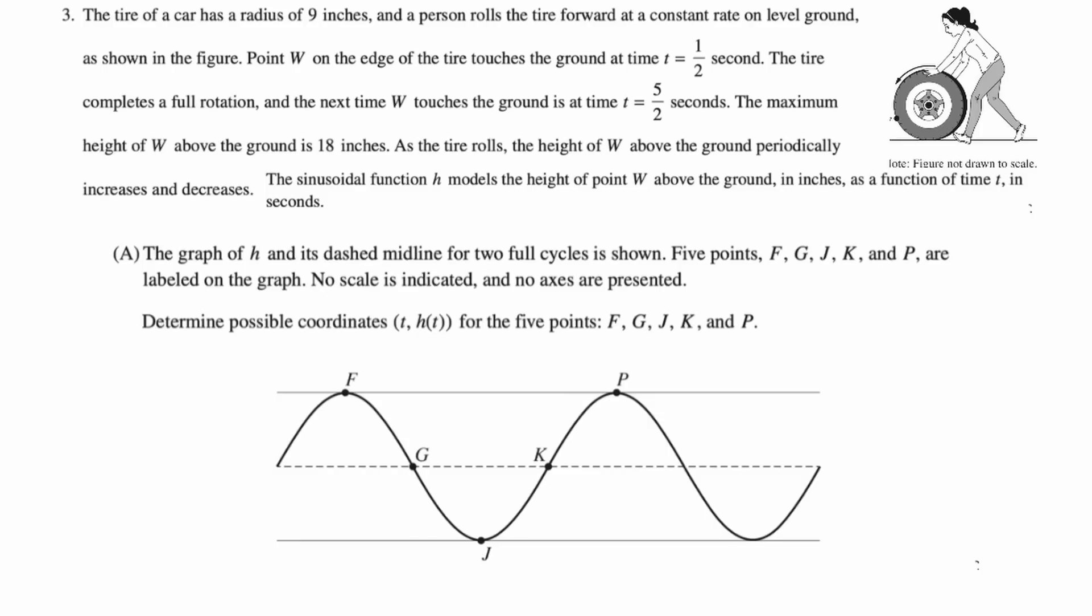In part A, what are we doing? Five points F, G, J, K, and P are labeled. No scales indicated and no axes are presented. Determine possible coordinates for (t, H(t)) for the five points F, G, J, K, and P.